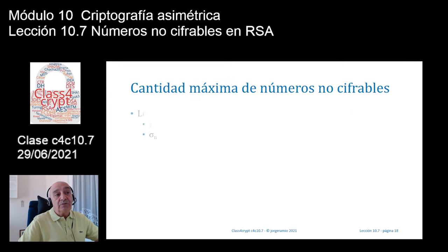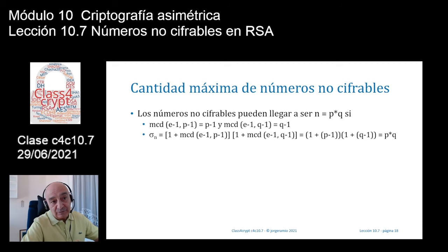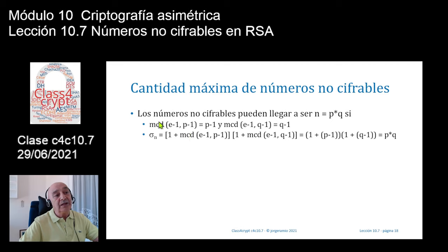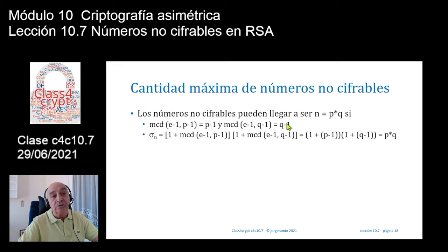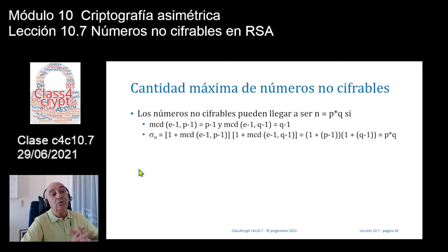¿Habrá una cantidad máxima de números no cifrables? Sí. Si en la ecuación el mcd(e-1, p-1) fuera igual a p-1, y también el mcd(e-1, q-1) fuera igual a q-1, entonces sustituyendo: (1+(p-1)) × (1+(q-1)) = p × q = N. Con lo cual todos los números: 0, 1, 2, 3, 4, hasta N-1 irían en claro.